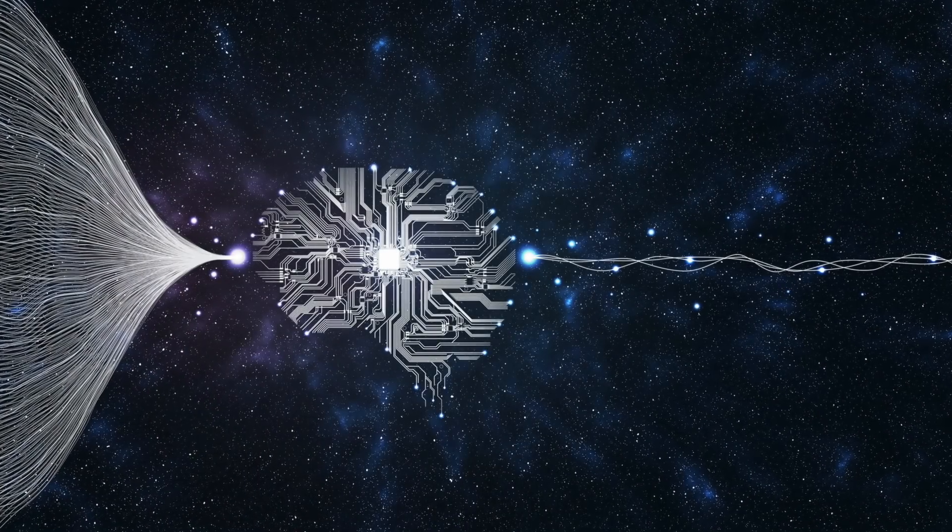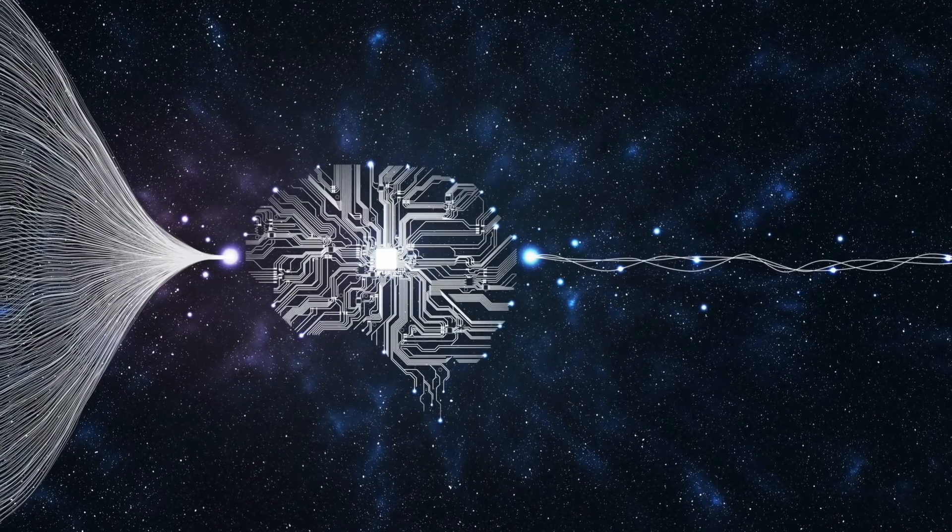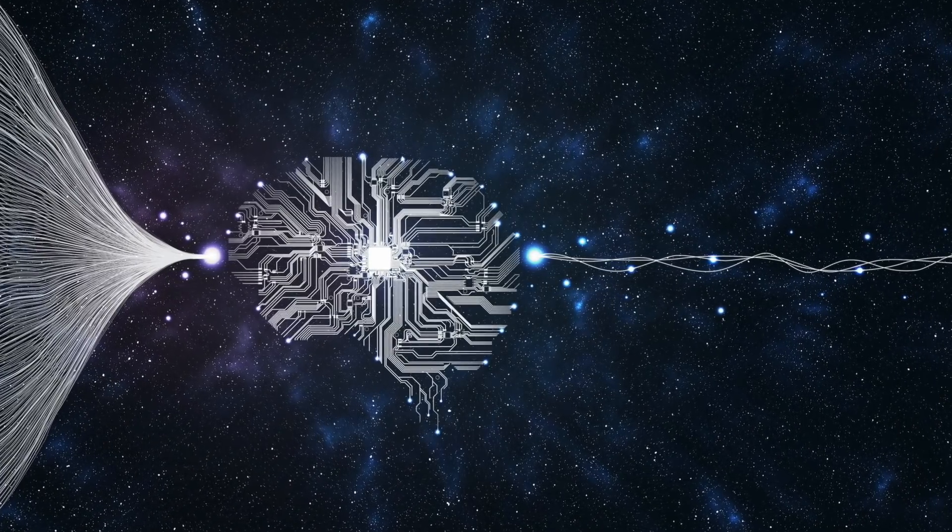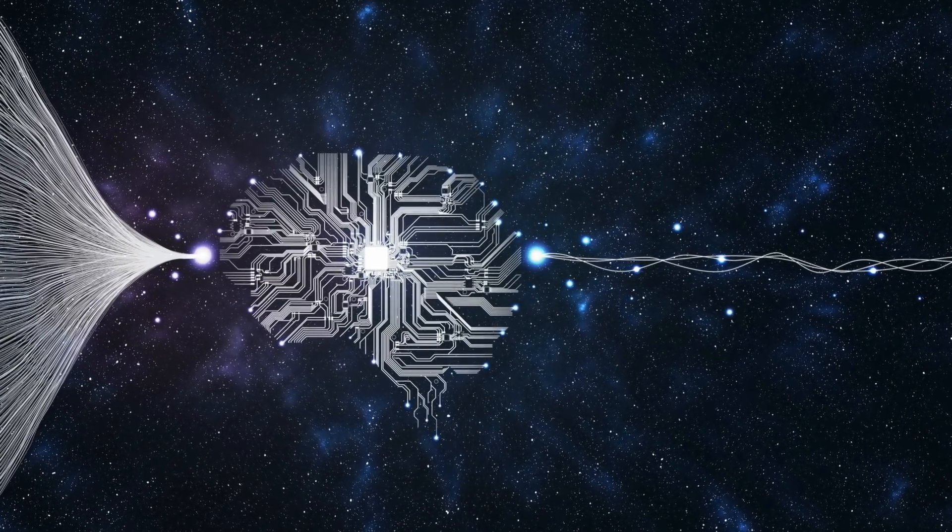On the off-chance that the exploration is effective, such PC frameworks would have the option to have an independent mind, scouring colossal measures of information, including satellite symbolism, with the speed and precision past the ability of people to search for indications of arrangements for a rocket dispatch, as per the greater part 12 sources. The sources included US authorities, who talked about the state of namelessness on the grounds that the exploration is grouped.